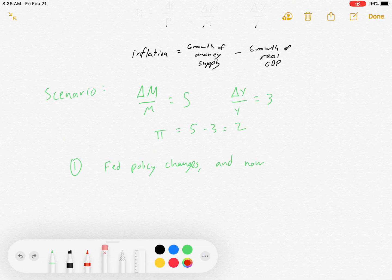So now let's say the Fed policy changes and our money supply is growing at 7%. So for whatever reason, they're expanding their money supply. What is that going to do to inflation if there's no change in GDP? Inflation will be 7% minus 3%, which is 4%. When the money supply increased by 2%, or the growth rate of money supply increased by 2%, inflation grew by 2%. There's a one-to-one relationship between them.